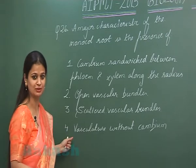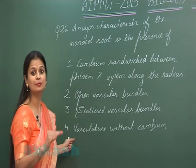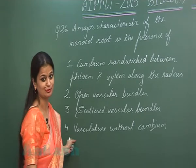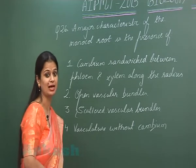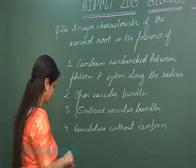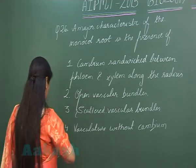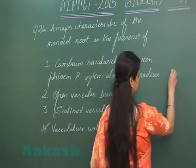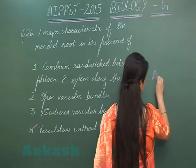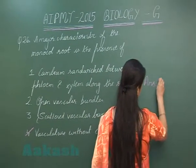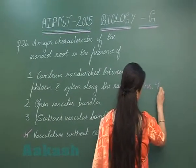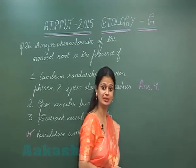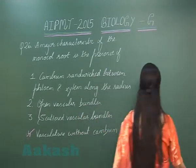The correct option is option number four: vasculature without cambium. Since cambium is absent, you call such vascular bundles closed vascular bundles. So the right option is option four. Let's move on to the next question.